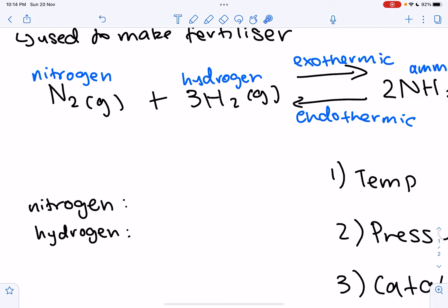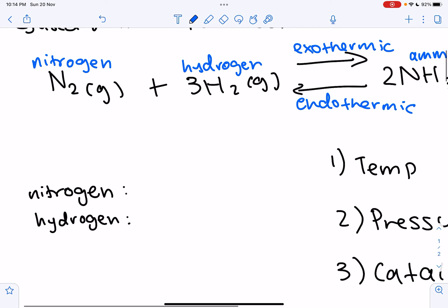So we have nitrogen and hydrogen gas reacting, right? But where did these gases come from? So the nitrogen gas comes from air, and the hydrogen gas comes from natural gas. So this is important to remember because you may get asked about this.